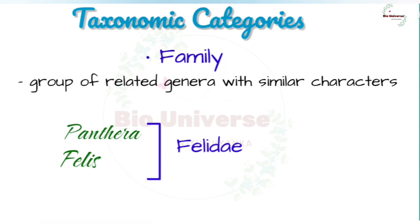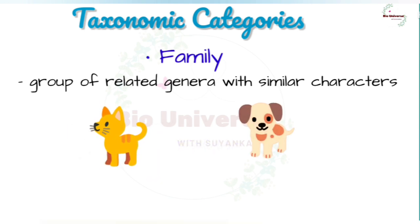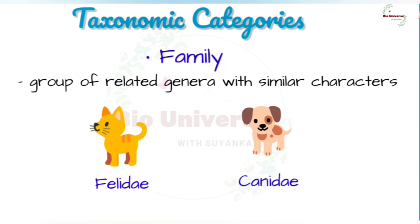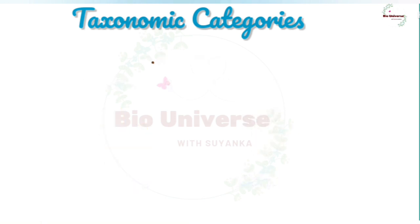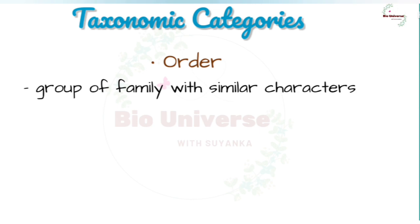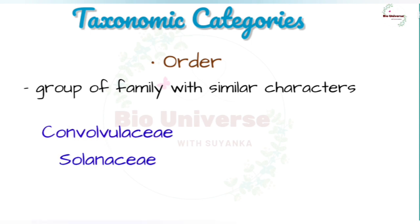If we observe the features of a cat and dog, we find some similarities and some differences. They are separated into two different families — Felidae and Canidae, respectively. Order is a taxonomic category having one or more related families that possess some similar characters, which are fewer in number compared to those of the genera within a family. Plant families like Convolvulaceae and Solanaceae are included in the order Polemoniales, mainly based on floral characters.